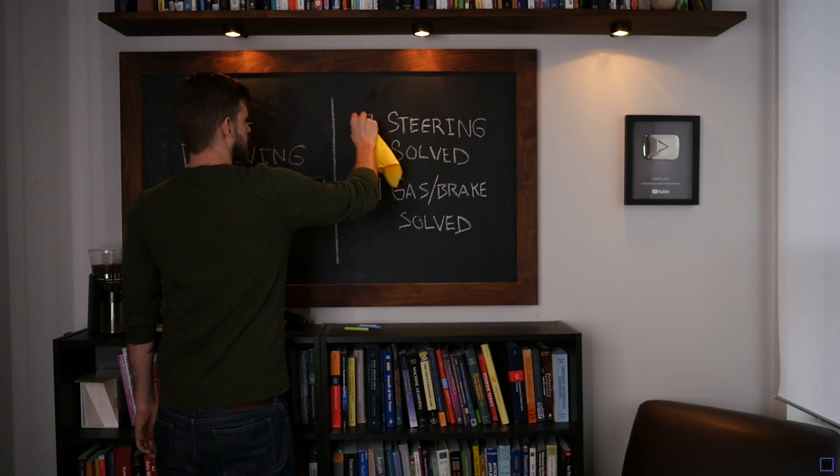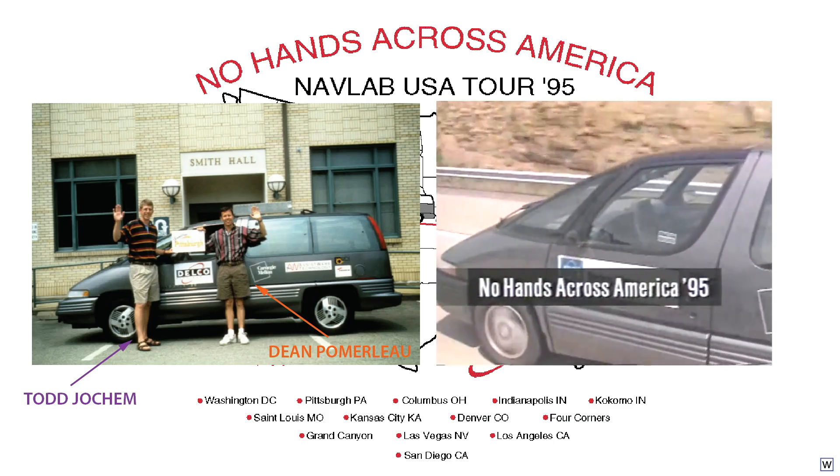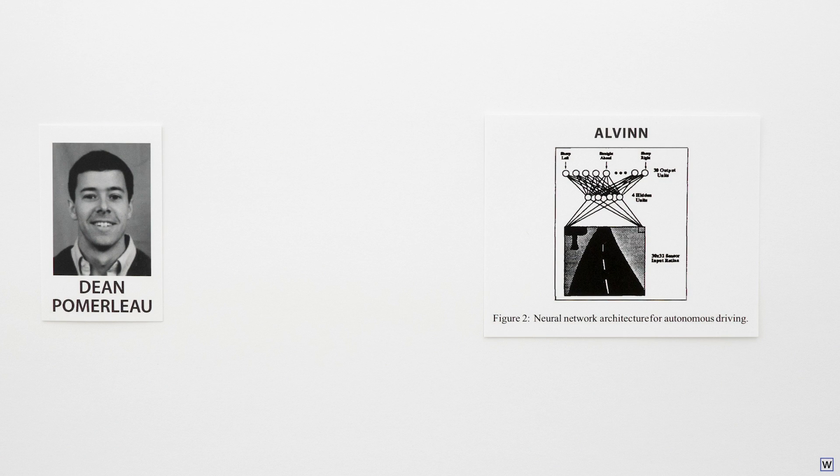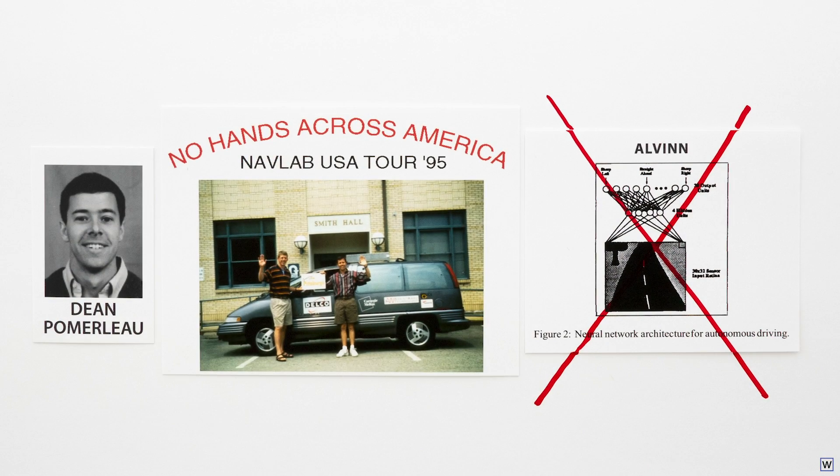We began this episode trying to figure out how Dean Pomerleau and Todd Yochum drove across the US 98% autonomously way back in 1995. Now, remarkably, Pomerleau, the inventor of the first end-to-end learning algorithm for autonomous driving, Alvin, arguably the most robust and adaptable self-driving vision algorithm on the planet in the late 80s and early 90s, did not use Alvin to drive across the US in 1995. But why? If end-to-end works so well, why can't we use it to build a production-grade self-driving car? Why can't we teach an artificial intelligence algorithm, like a deep neural network, to drive by learning from huge amounts of human driving data? And how did Dean and Todd make it across the US in 1995? Some answers, next time. Thanks for watching.